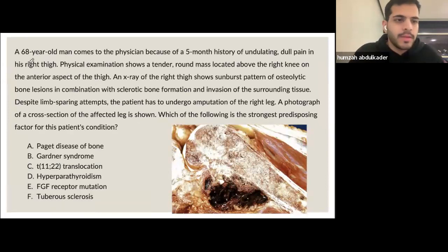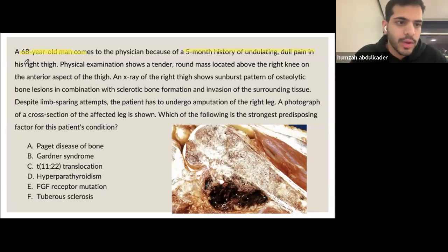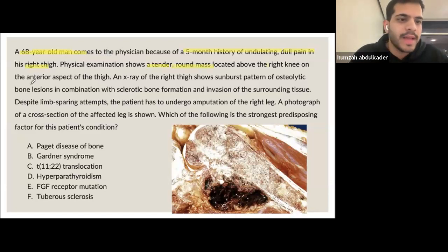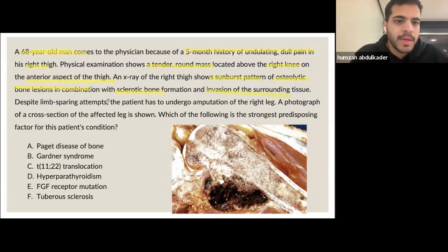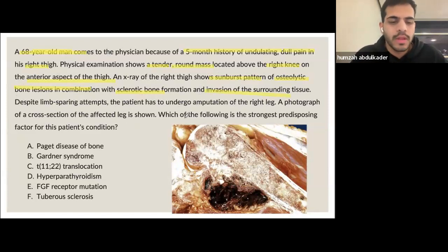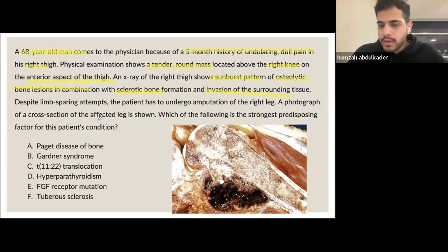A 16-year-old boy comes to the physician because of a five-month history of undulating dull pain in his right thigh. Physical exam shows a tender round mass located above the right knee on the anterior aspect of the thigh. An X-ray shows a sunburst pattern of osteolytic bone lesion in combination with sclerotic bone formation and invasion of the surrounding tissue. Despite limb-sparing attempts, the patient has to undergo amputation. Which of the following is the strongest predisposing factor for this patient's condition?